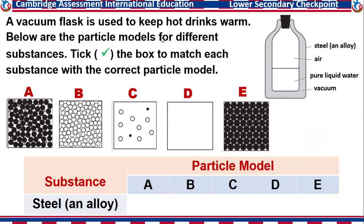The first question asks which particle model represents steel. Steel is an alloy. It will be advisable for us to name all these models. Model A is a solid — if you look at it closely, there are tiny gray round balls that are not as black as the thick ones. Small and gray. So A is a mixture of metals, a mixture of solid substances — A is an alloy.